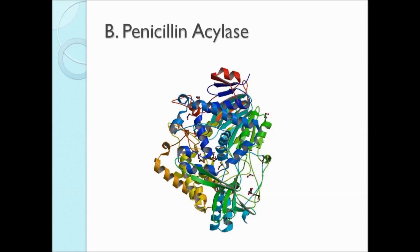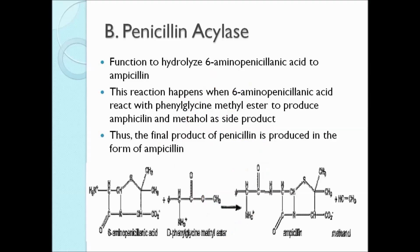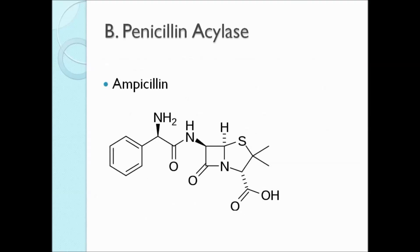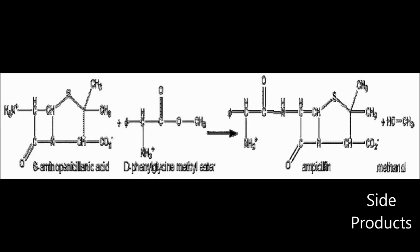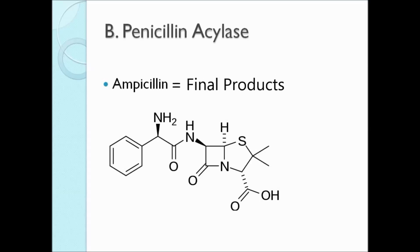Another enzyme involved in penicillin synthesis is penicillin acyl A. This enzyme functions to hydrolyze 6-aminopenicillanic acid to ampicillin. This reaction happens when 6-aminopenicillanic acid reacts with phenylglycine methyl ester to produce ampicillin and methanol as a side product. Thus, the final product of penicillin is produced in the form of ampicillin.